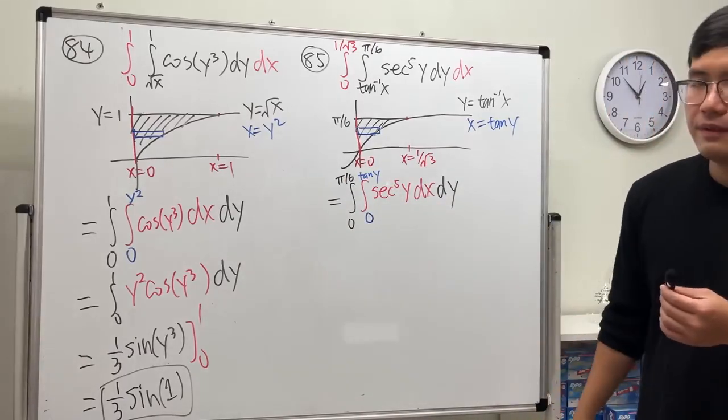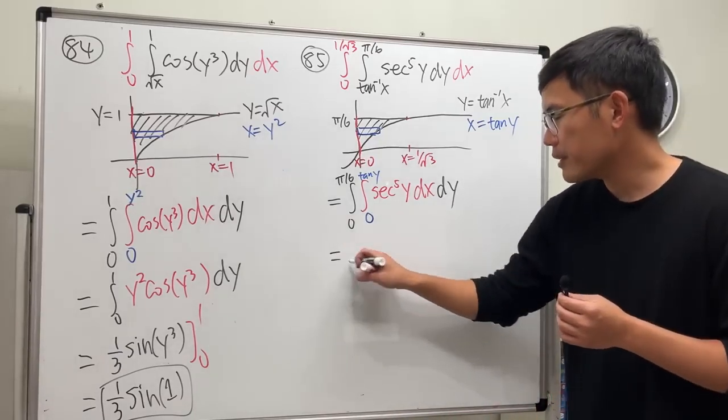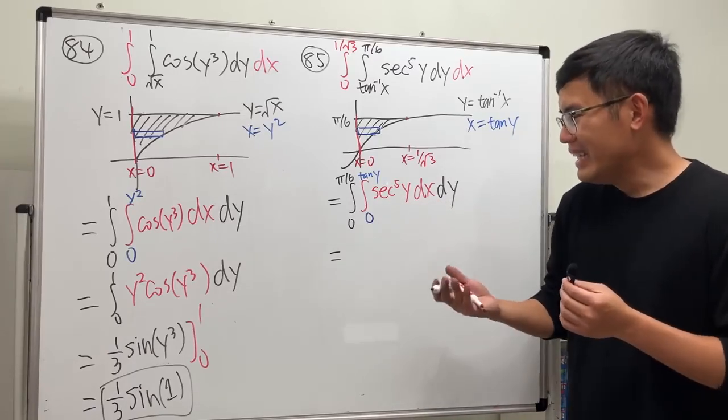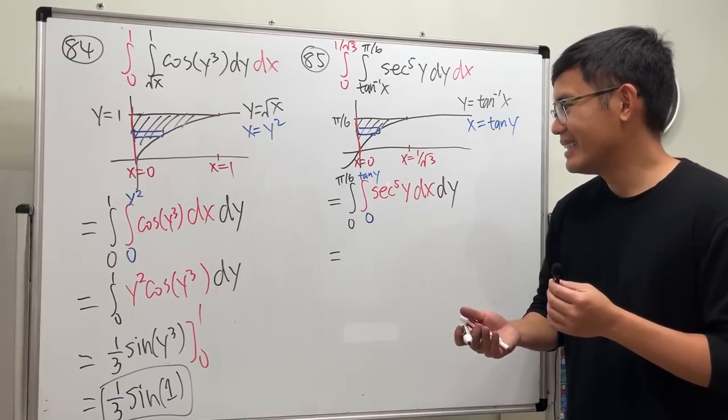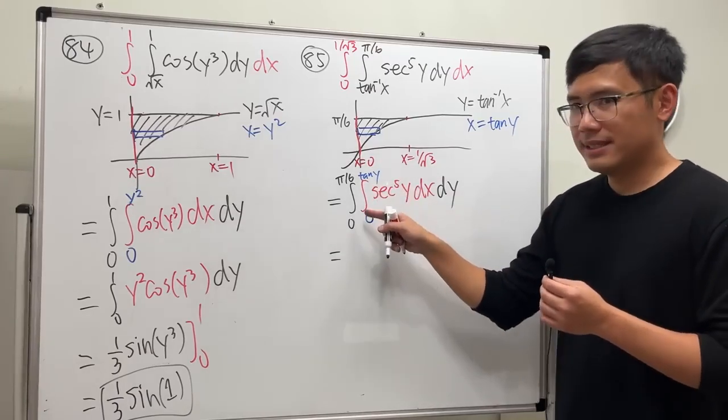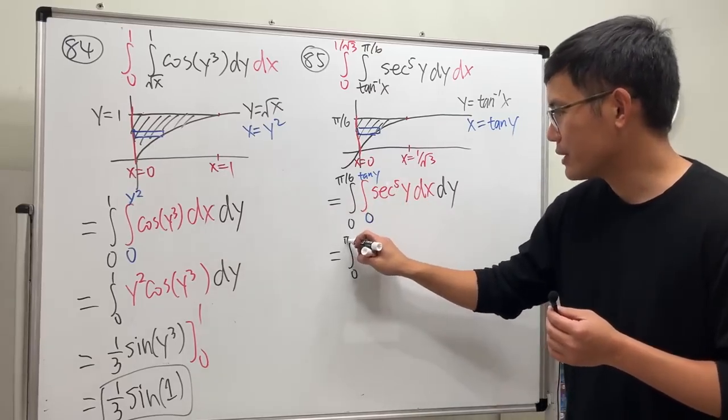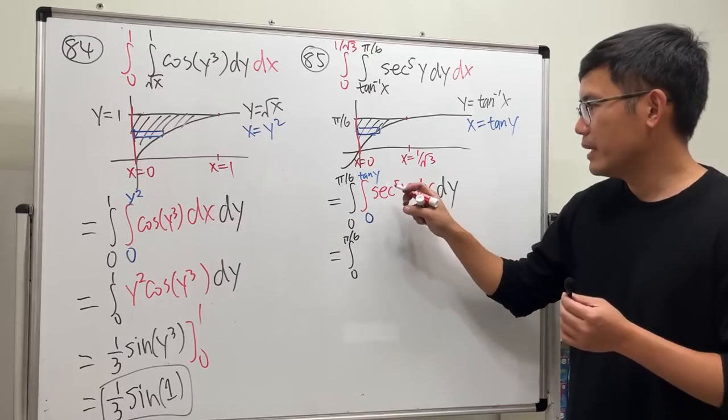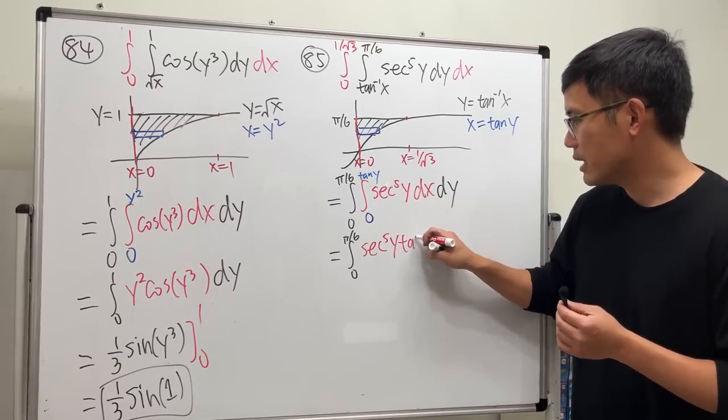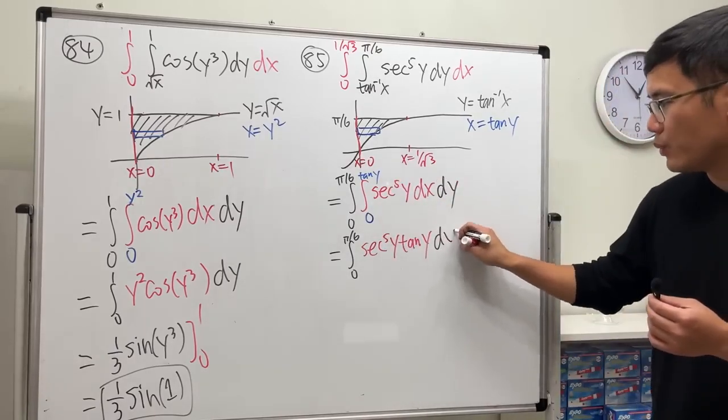Now, is this any better? Yes it is, trust me. This thing in the x world. Yeah, let's just do that. We just put x and we'll put a tangent in. So first we have zero to π over six still at the front. And then we have secant to the fifth power y times tangent y. And the plug-in of zero is nothing, so that's what we have. So we have dy here.